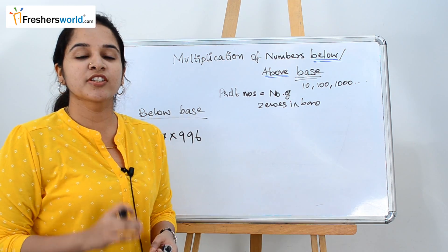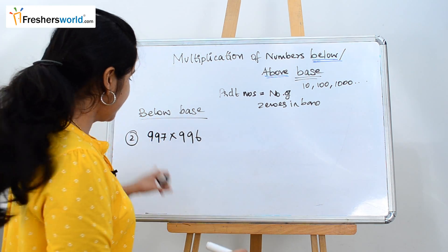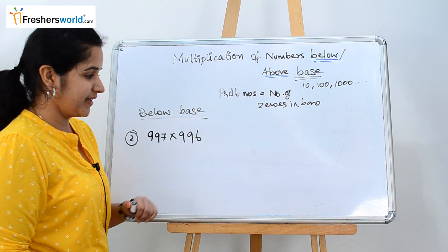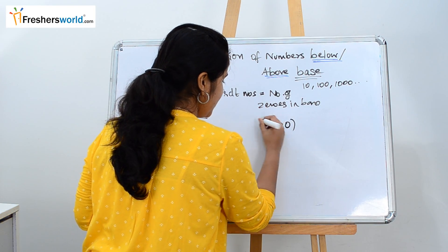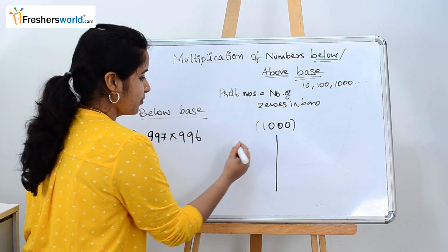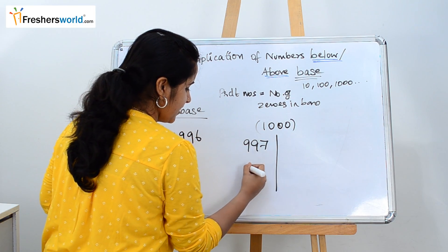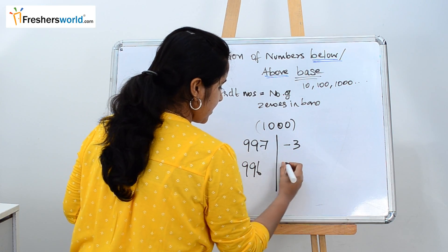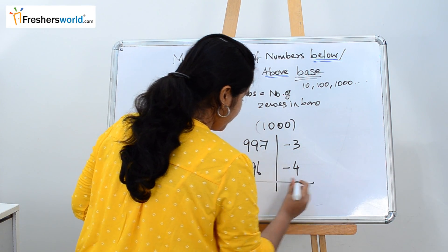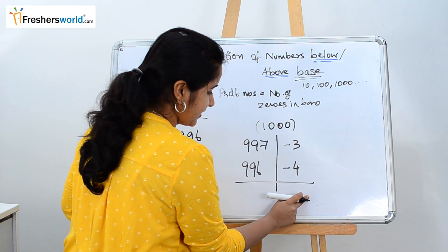Let's solve another problem. The second question below the base is 997 into 996. First step is identifying the base. We know the base is 1000. Let's consider that. Write the two numbers. 997, 996 subtracted from 1000. So it's minus 3 and minus 4. What do we do here? Write this sum here and product here.